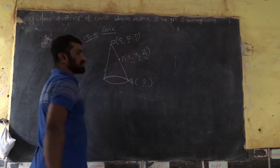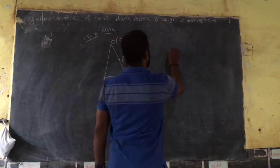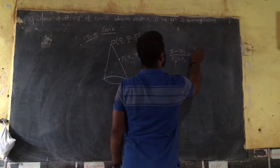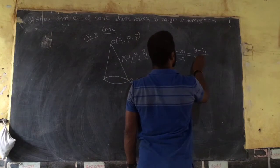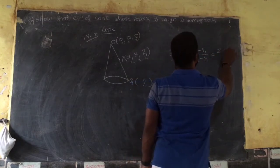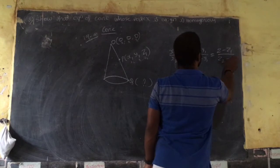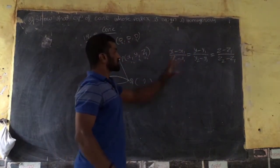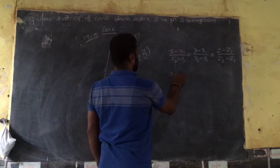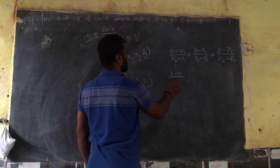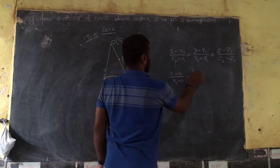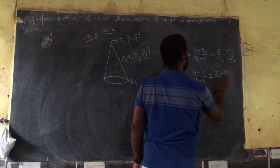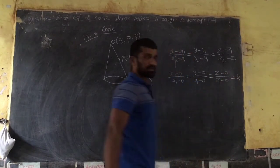Using the two-point formula: (x − x₁)/(x₂ − x₁) = (y − y₁)/(y₂ − y₁) = (z − z₁)/(z₂ − z₁). Substituting (x₁, y₁, z₁) = (0, 0, 0), we get x/x₁ = y/y₁ = z/z₁ = r.